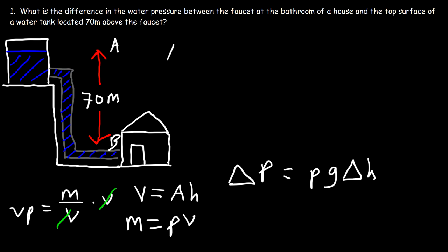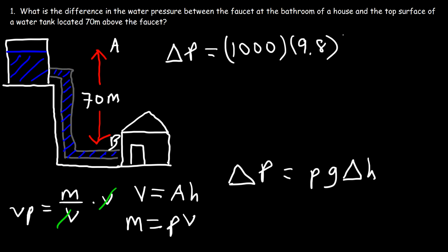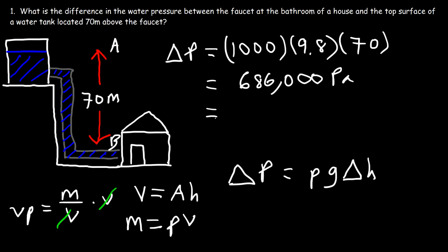So the change in pressure is going to be the density of water, which is 1,000 kilograms per cubic meter, times the gravitational acceleration, which is 9.8 meters per second squared, times the height difference of 70 meters. So multiplying those three numbers gives us 686,000 Pa. So that's the answer.